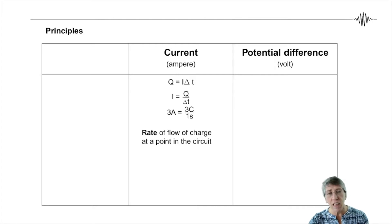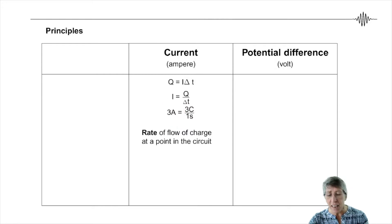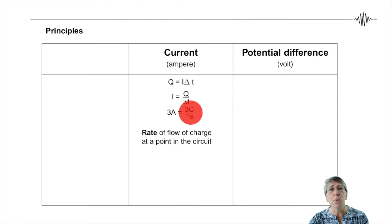If I have a reading of 3 amperes on my ammeter, that means 3 Coulombs of charge is traveling past that point in one second.